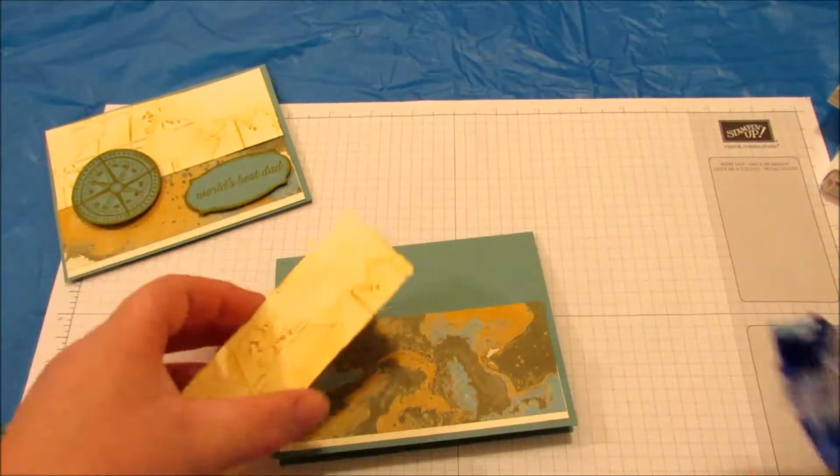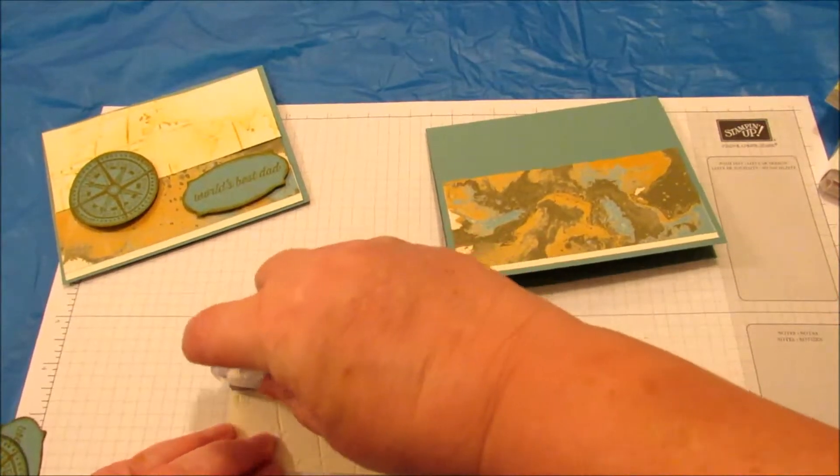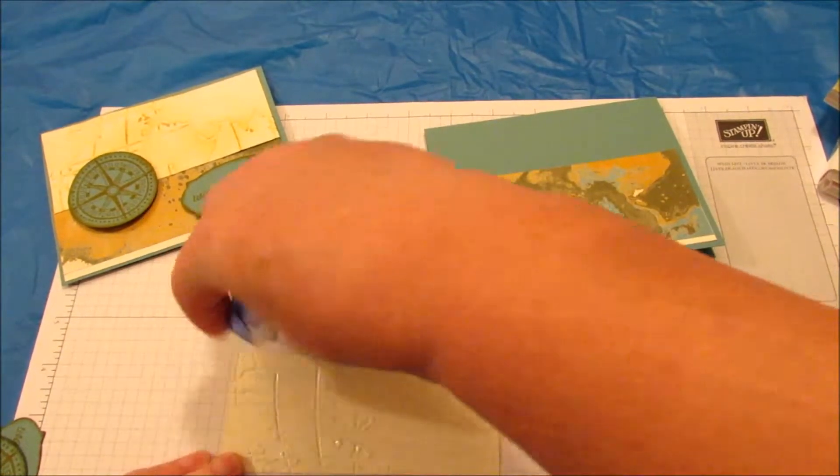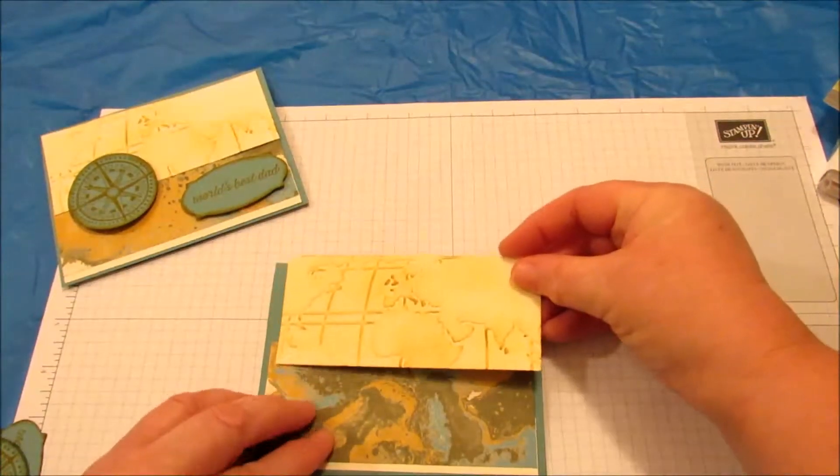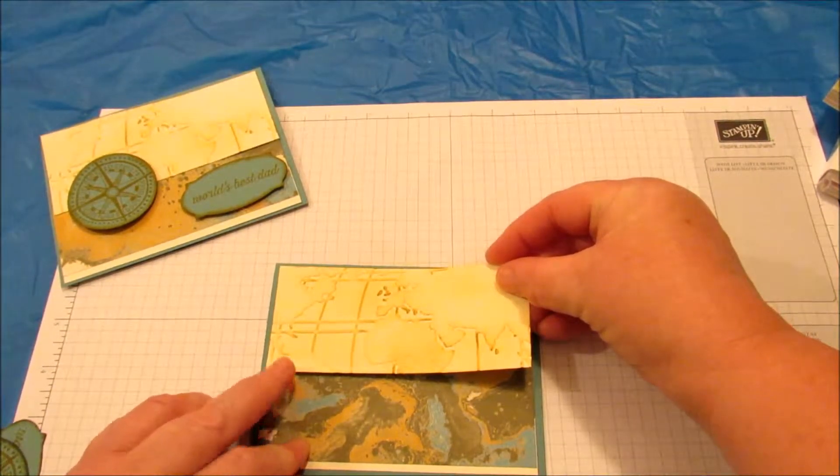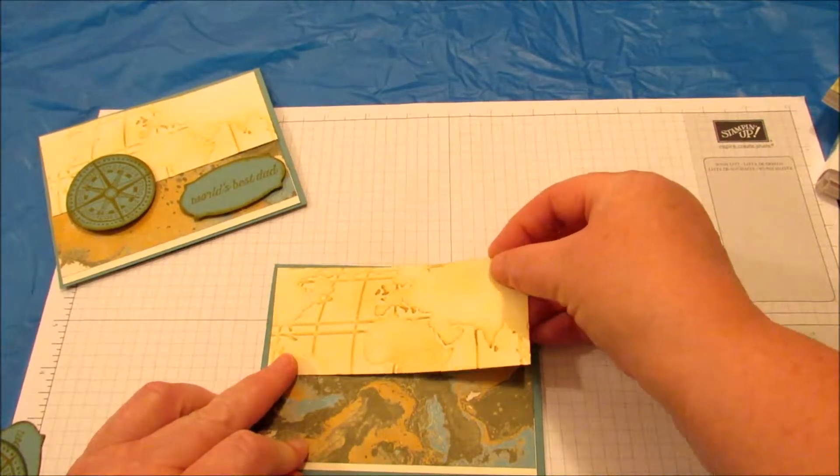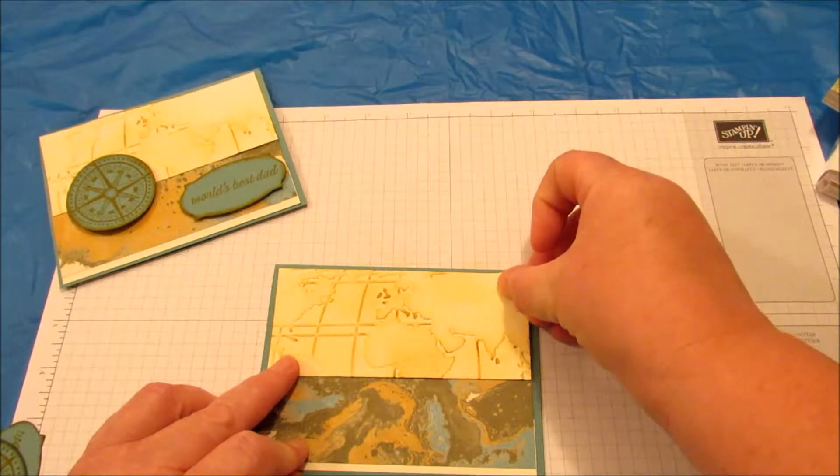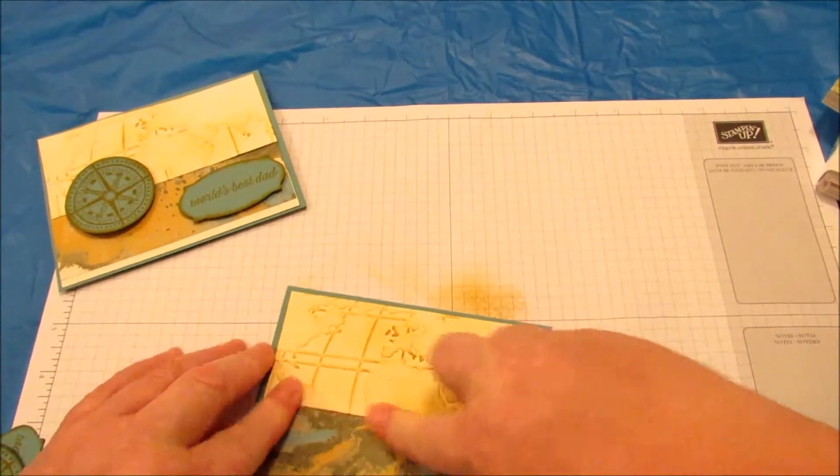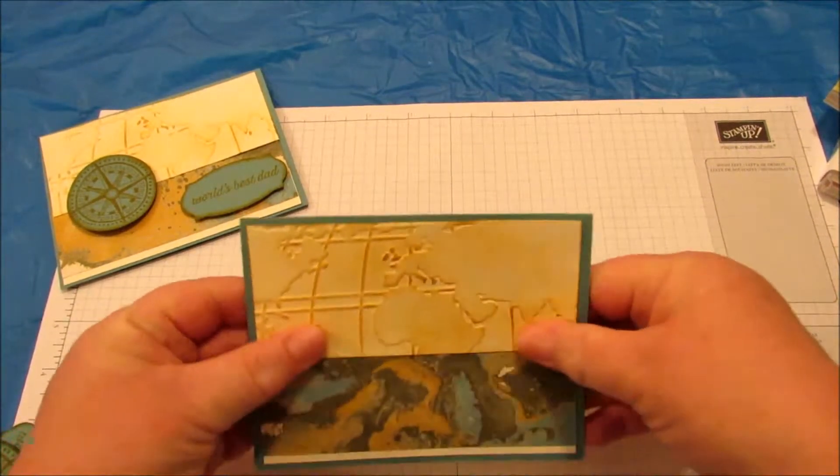Now I'm going to take our embossed piece and put Snail adhesive on the back of this. And I'm going to place this, I want it just a little off the top. I'm going to get edge to edge. There we go.